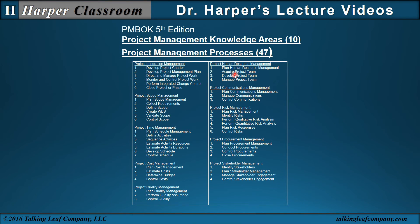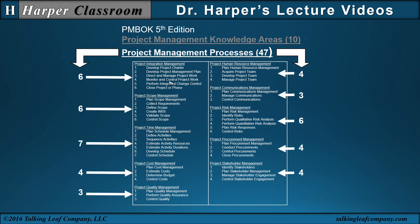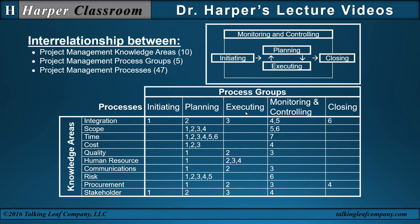The structure of the organization is given by this table. There are ten knowledge areas and 47 management processes. The ten knowledge areas are the headings of each list, and within each list are processes which define the knowledge areas. Here we have six, here we have seven, here we have three, four. The relationship between the knowledge areas, process groups, and processes are given by this table.